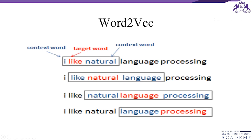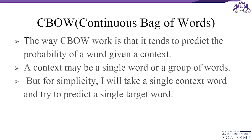To understand context and target words, consider the sentence: 'I like natural language processing.' Here, we identify what the context word is and what the target word is. This is exactly what Word2Vec tells us — the relationship between context and target words.